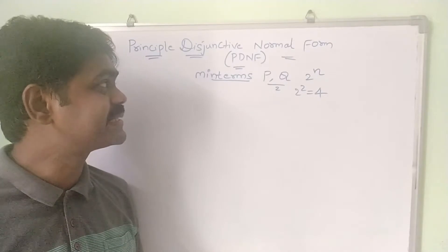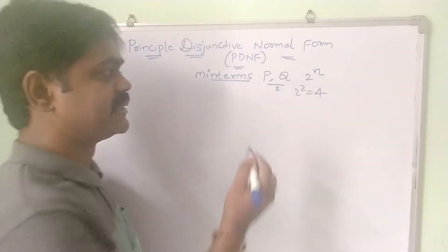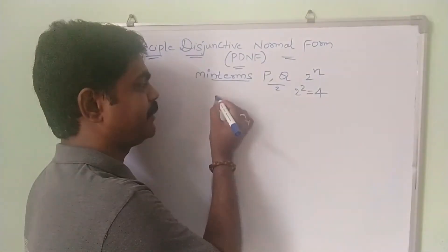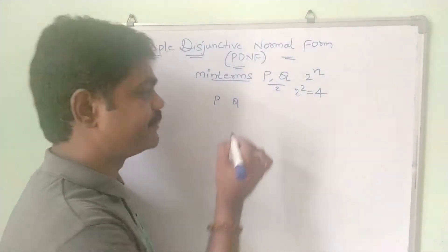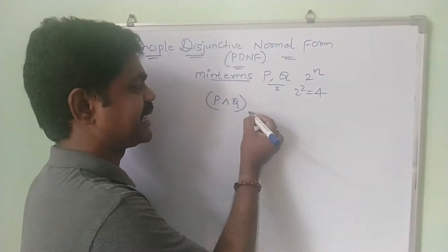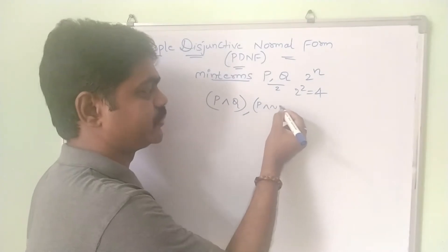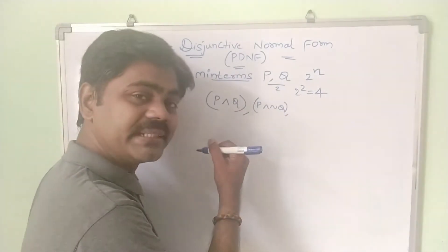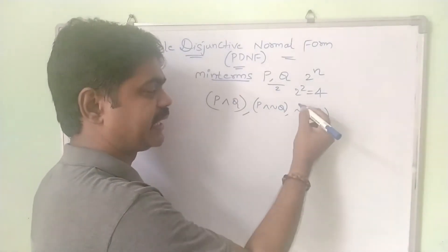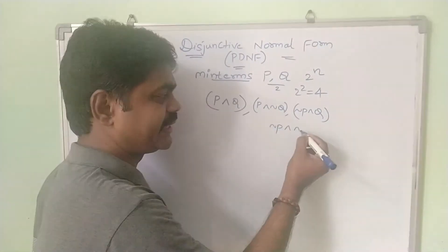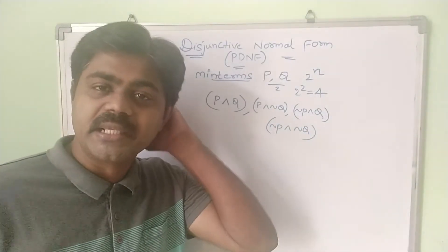Since PDNF is a sum of products, I need 4 products. The first minterm is P∧Q, the second is P∧¬Q, the third is ¬P∧Q, and the fourth is ¬P∧¬Q. These are the four minterms for two variables.